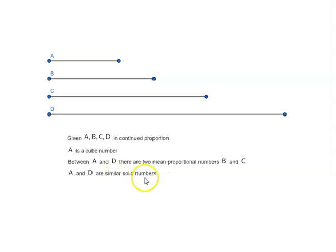Again, this we have proved. So since they are solid numbers and they are similar, solid numbers means product of three numbers. And similar means the corresponding sides are in proportion.